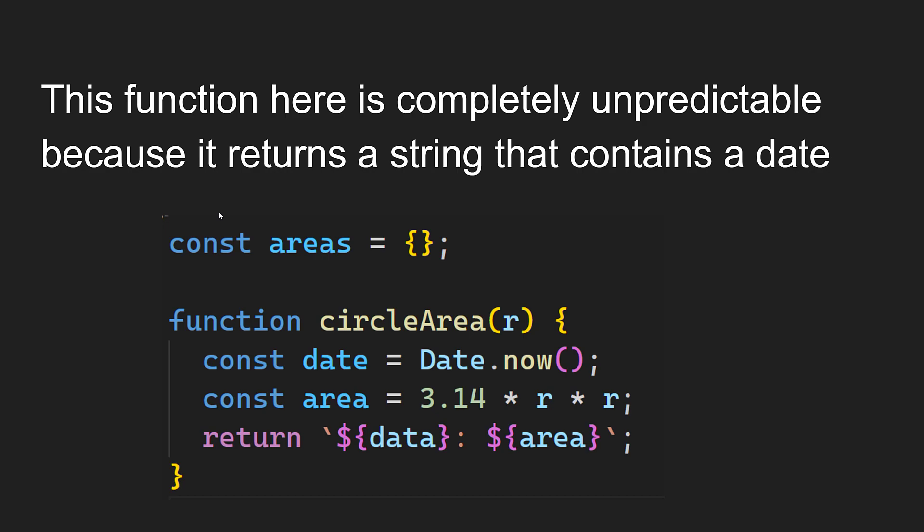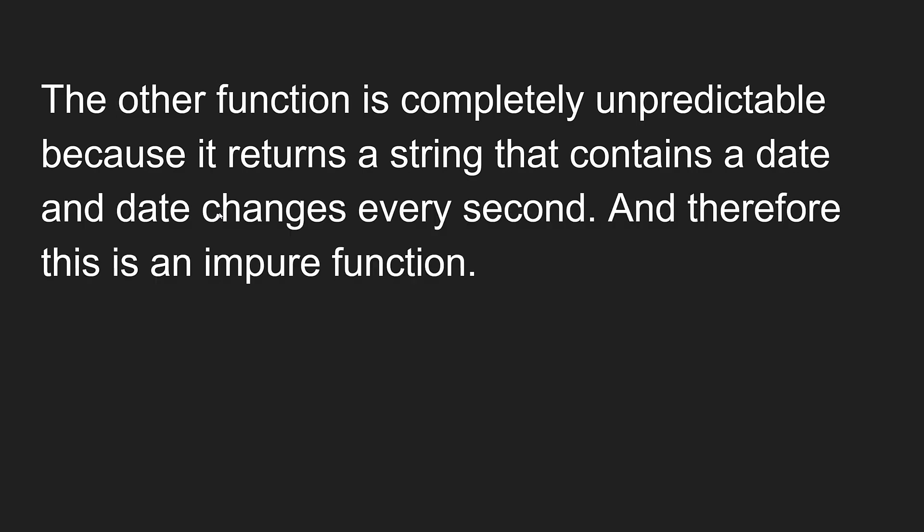This other function is completely unpredictable because it returns a string that contains a date. In the example, we have the same 'circleArea' function, but this time we include a Date function that takes the current date, and we return the date combined with the area. Note there is a spelling mistake — the variable should be 'date' not 'data'. Because every time you execute this function the current date will be changing every second, the output changes even when you send the same input. Therefore, this is an impure function, not a pure function.